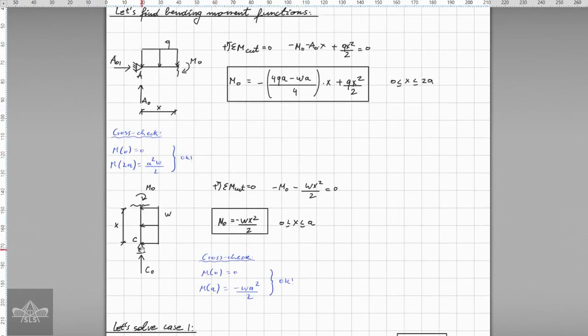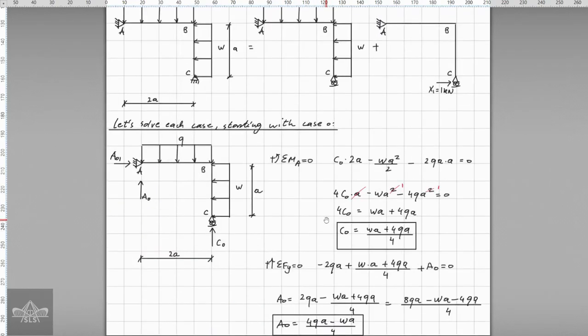Continuing from the other side, I take the cut sections from the bottom and then I decide the bending moment functions for x's which lie between bigger than zero and smaller than a, which is member BC.